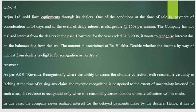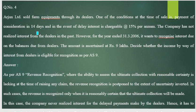Question number four: Arjun Limited sold farm equipment through its dealer. One condition at the time of sale is that payment of consideration must be made within 14 days. So the goods are given to the agent/consignee who must sell them within 14 days.